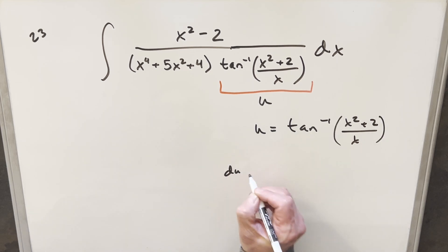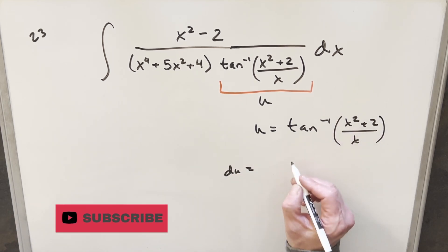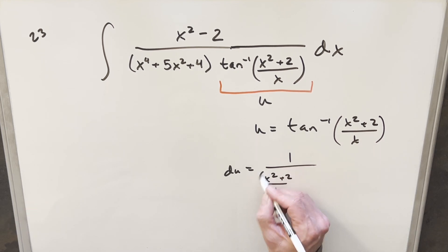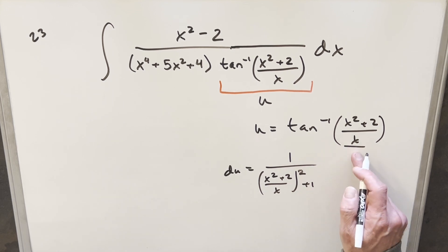Next, let's go ahead and find our derivative. So first, taking the derivative of arctan, this is going to be 1 over this thing squared. So we'll have x squared plus 2 over x all squared plus 1. But then we'll need the chain rule taking the derivative of this. We'll use the quotient rule.